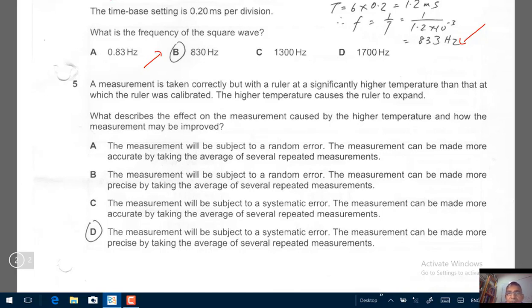Systematic error. And we are looking at correct response D. The measurement will be subject to systematic error because we have a faulty measuring instrument. The systematic error is when you have errors that are consistent and repeatable. The measurement can be made more precise by taking the average of several repeated measurements. I'm sure you all know the difference between precision and accuracy. Precision is when the measurements are all close to one another. Accuracy is when the measurements are close to the true value. Correct response will be D.